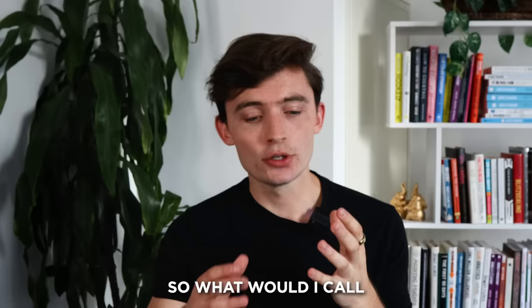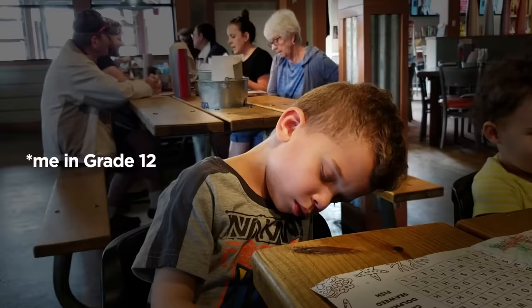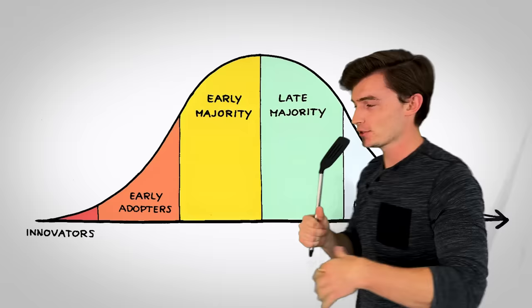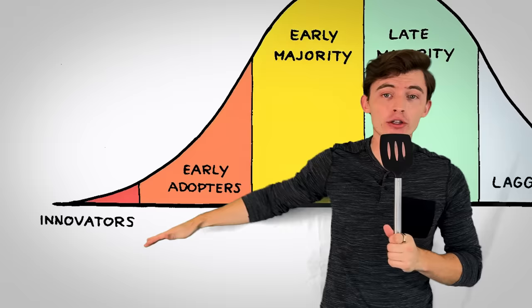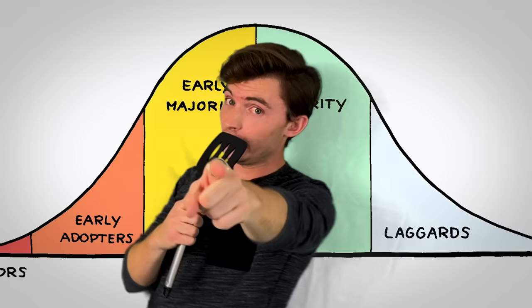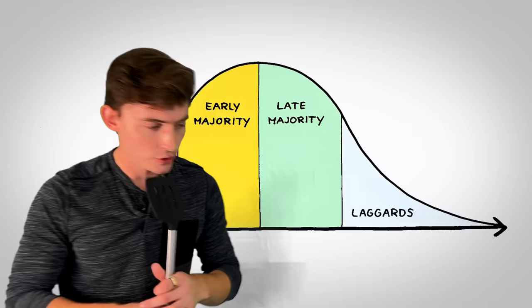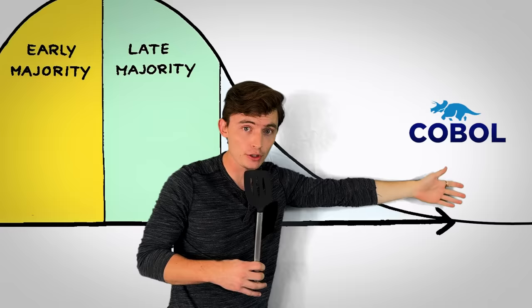What would I call an institution that still uses COBOL? Well, there's a technical name for it — it's called a laggard. Here's the adoption curve. It's broken into sections: the innovators, the early adopters, the early majority, the late majority, and the laggards. The laggards have a long tail, which means they extend indefinitely into the future — this is why some people still use COBOL. Every language and framework has its own adoption curve.